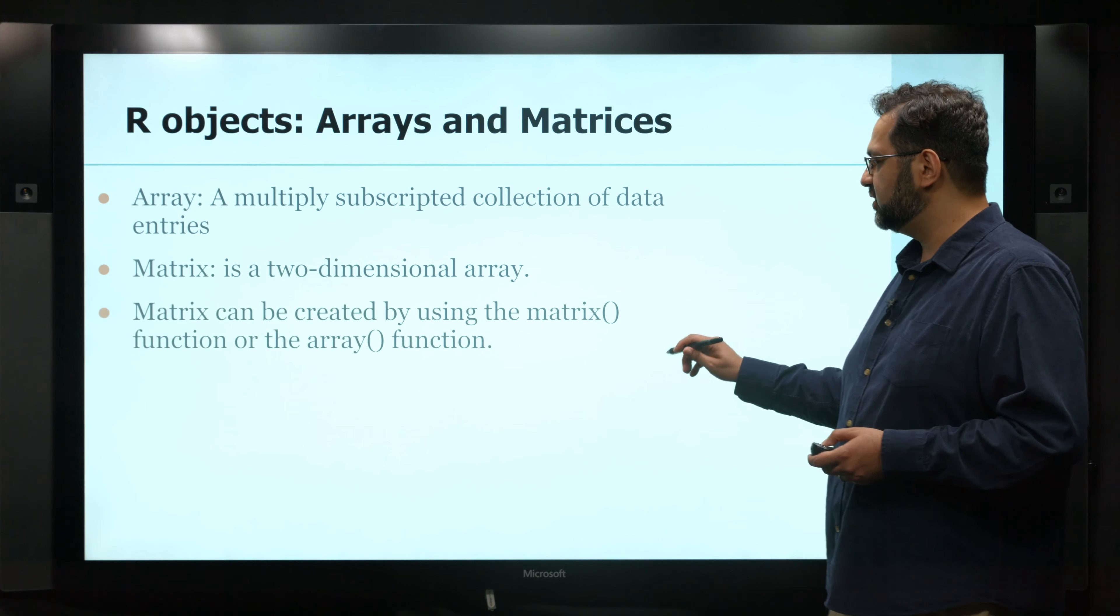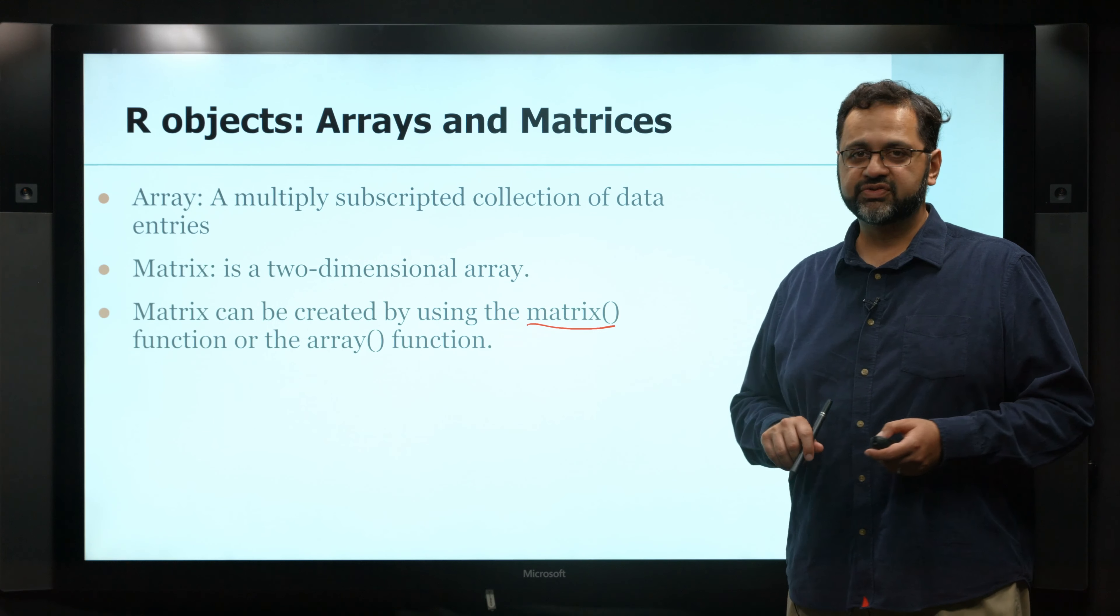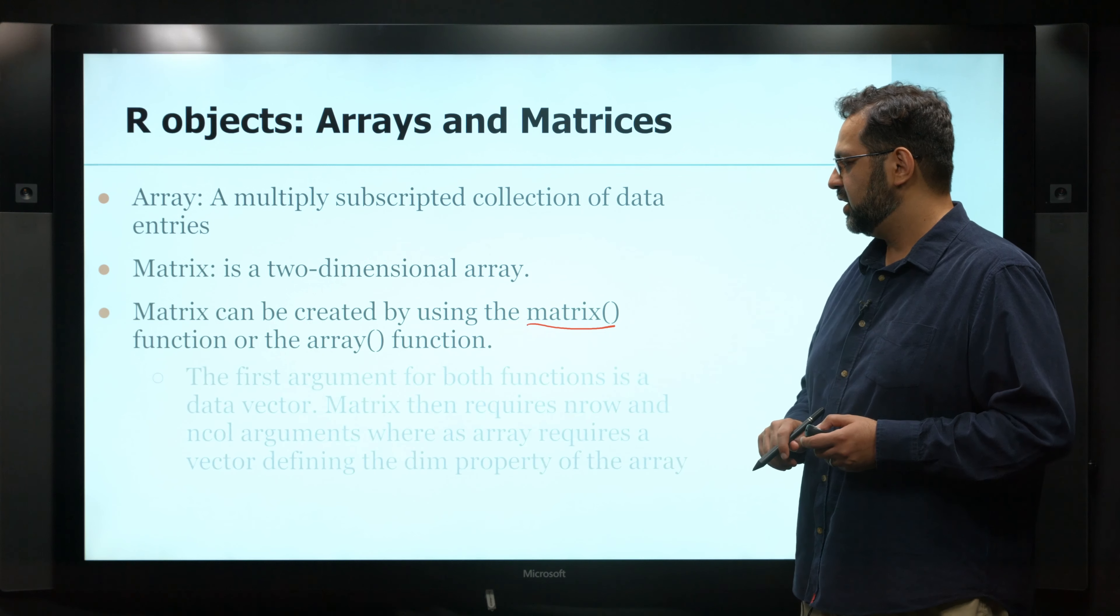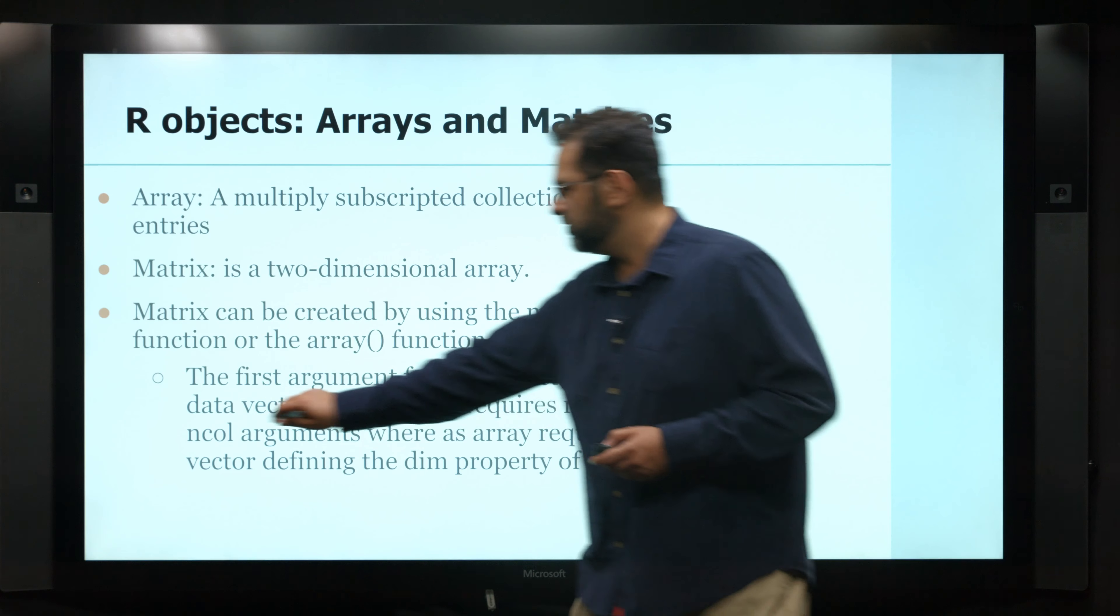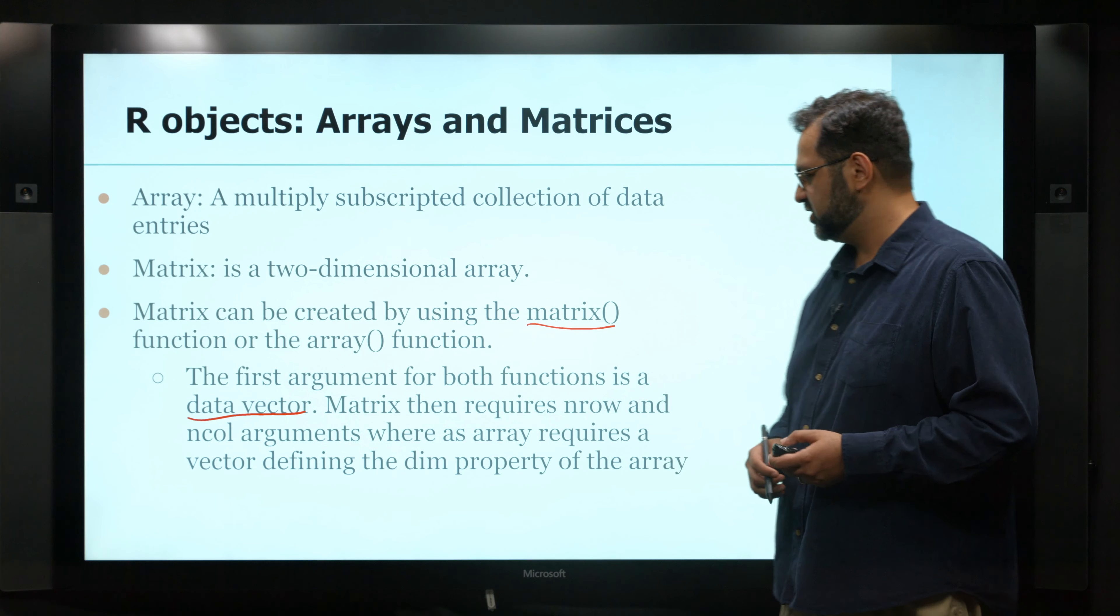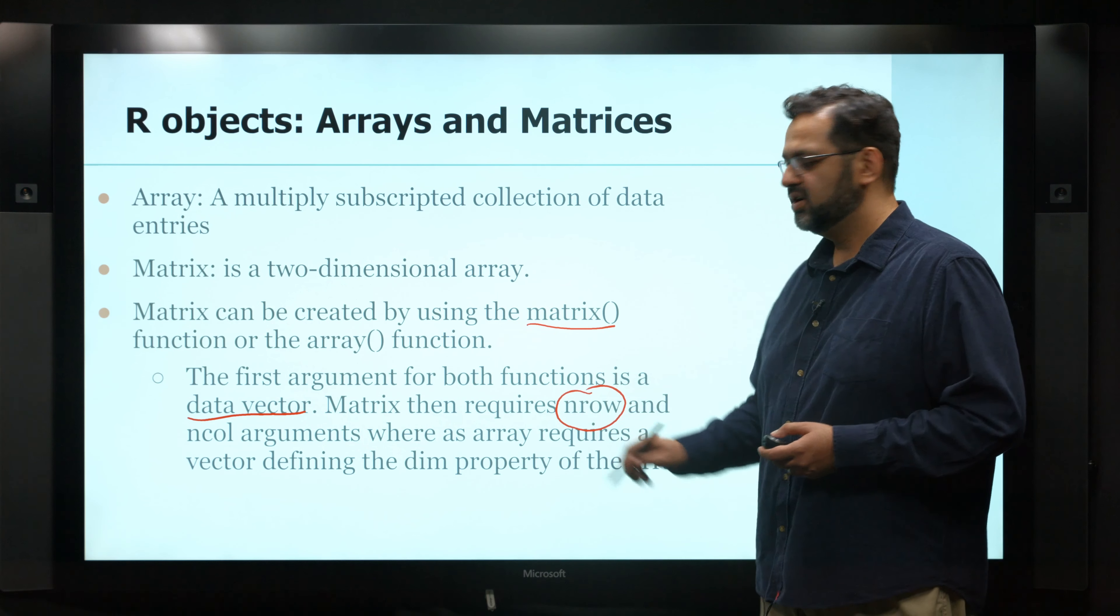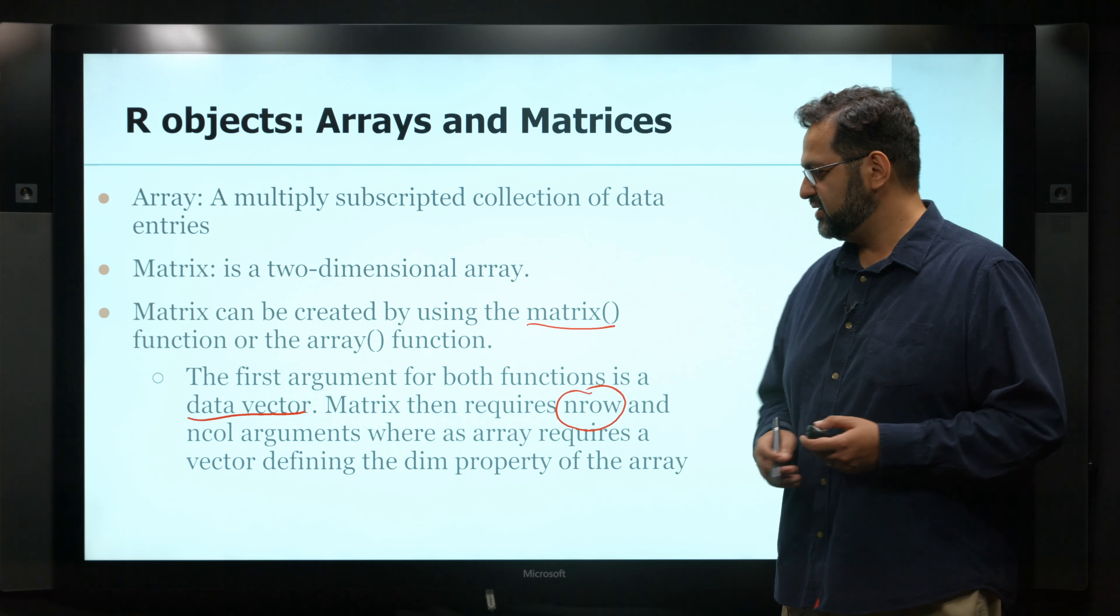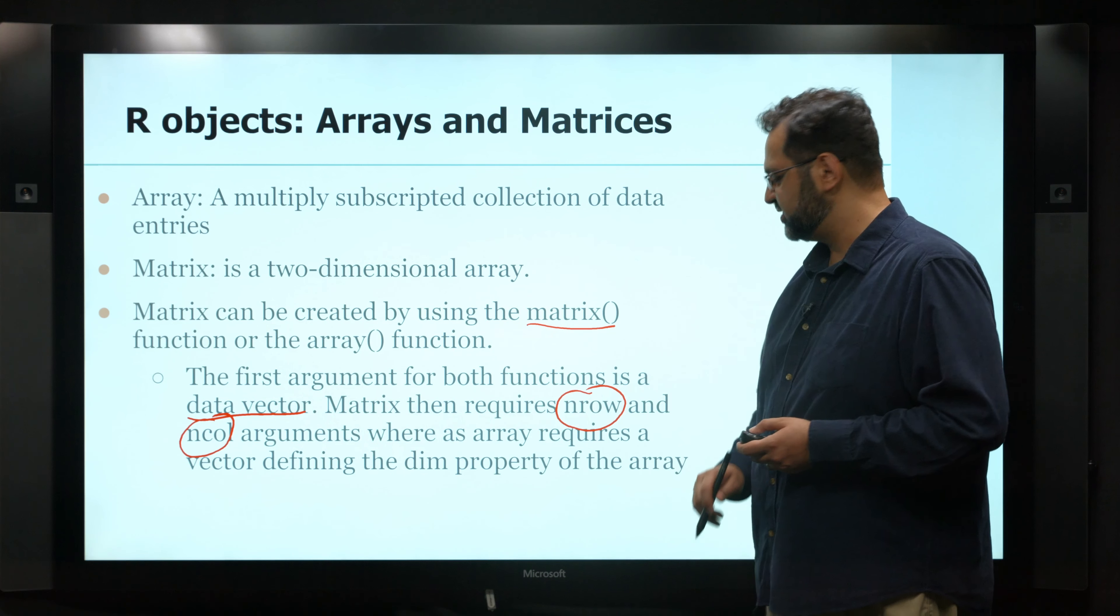So we can create a matrix using the matrix command, which is very similar to the array function. The first argument of the matrix command is basically the values that you want to store in the matrix. And then it also requires you to tell it how many rows your matrix has, and also the number of columns your matrix has.